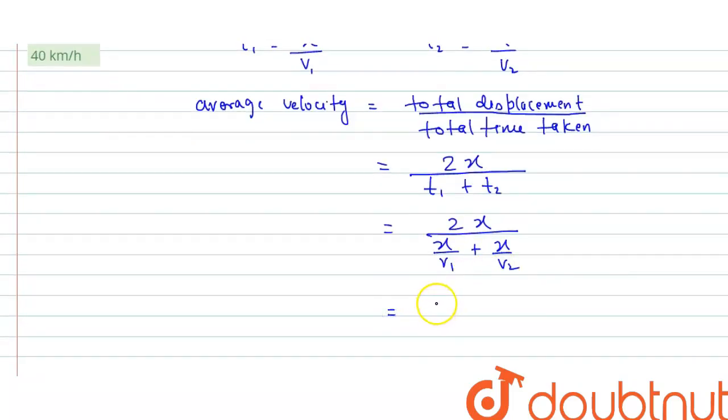So this will be equals to 2 v1 v2 LCM, so v1 into v2 divided by x. Take x common and cancel out, so this will be equals to v2 plus v1.